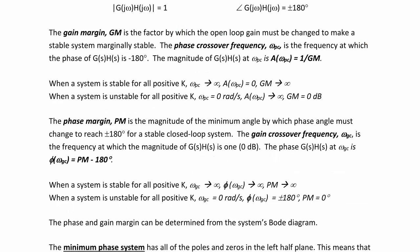The gain margin is the factor by which the open-loop gain must be changed to make a stable system marginally stable. The phase crossover frequency, ω_pc, is the frequency at which the phase of G(jω)H(jω) is negative 180 degrees. The magnitude of G(jω)H(jω) at ω_pc is 1 over GM. When a system is stable for all positive gain k, ω_pc approaches infinity and the magnitude equals zero and the gain margin approaches infinity. When a system is unstable for all positive gains k, ω_pc equals zero radians per second and the gain margin is zero decibels.